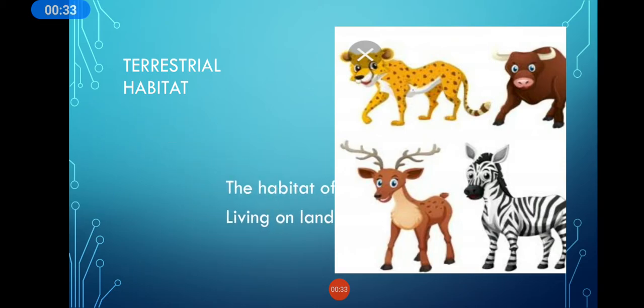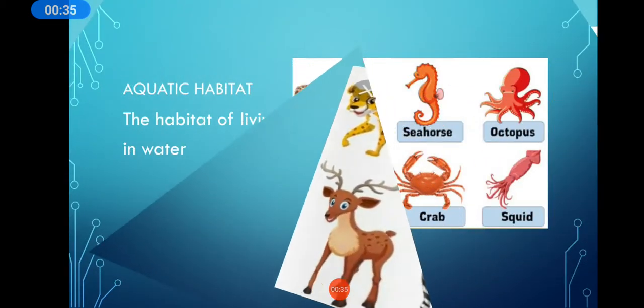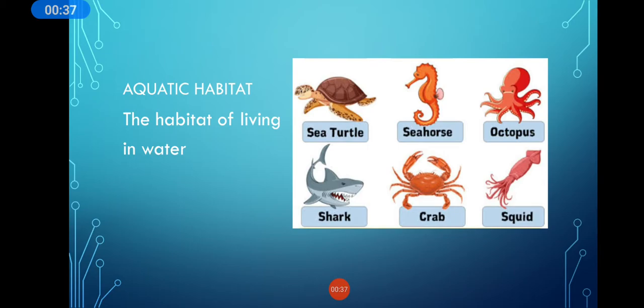Now let us proceed with our aquatic habitat. The habitat of living in water is known as aquatic habitat. For example, shark, fish, whale, crab, squid, octopus, and many more.